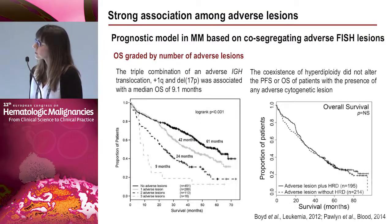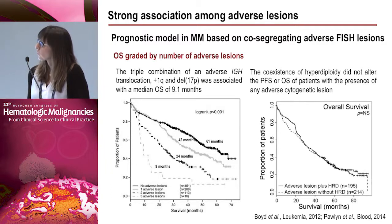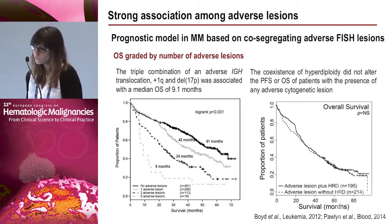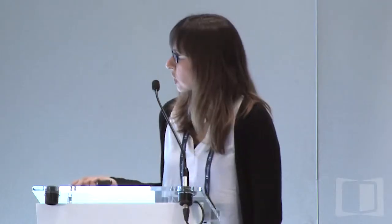This co-occurrence is important because each adverse lesion has an impact on overall survival and progression-free survival. The study showed that the triple combination of an adverse IGH translocation, gain of 1q, and deletion of 17p was associated with a median overall survival of only nine months. Interestingly, in hyperdiploid cases, the coexistence of both types of alteration did not significantly alter progression-free survival or overall survival.